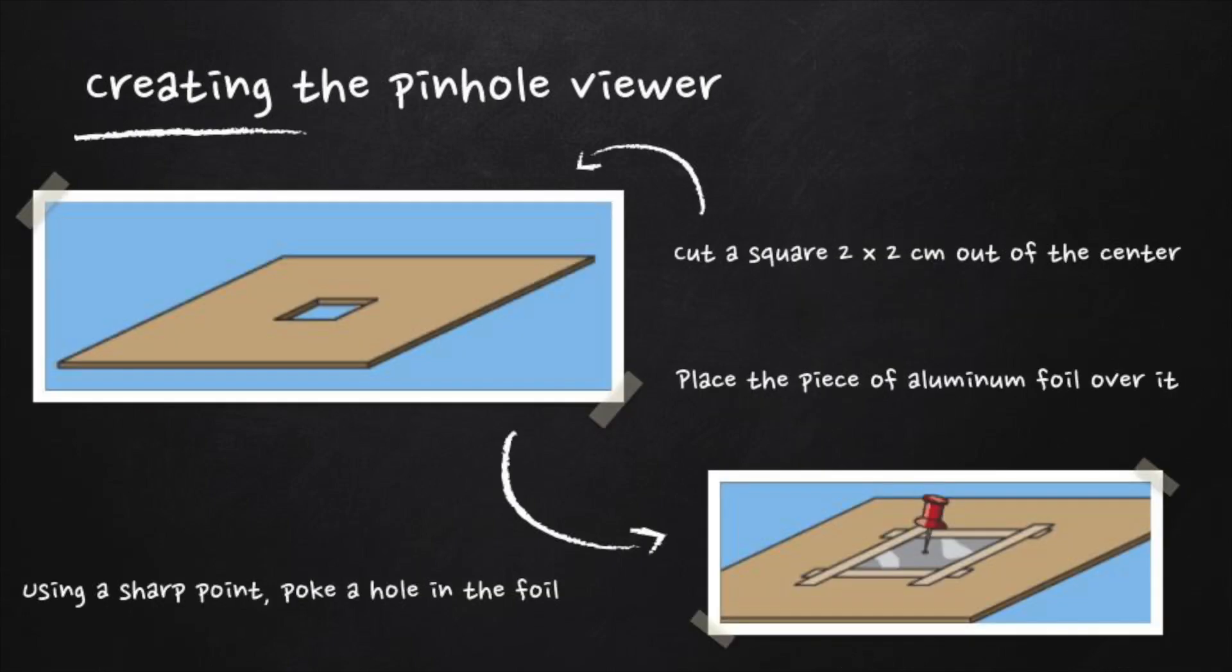The first step to creating your viewer is to cut out a square in the center of a piece of cardboard where each side of the square is approximately 2 centimeters or 3 quarters of an inch. Then you are going to put a piece of aluminum foil to cover that little square and tape it in place. Keep the aluminum foil as smooth as possible. Now, using the push pin, poke a small hole in the center of the foil. And now you have your pinhole viewer.